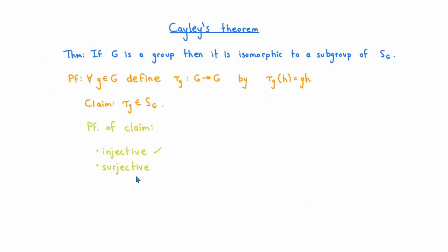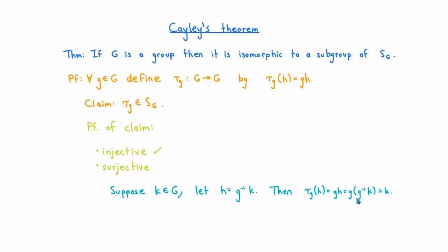To show that τ_g is also surjective, suppose k is any element of the group G. We need to show there's an element h in G with τ_g of h equal to k. Comparing with the definition of τ_g, we should take h to be the element g⁻¹k. With this value of h, τ_g of h is g times g⁻¹ times k, which equals k. Since every element of the codomain is in the range of this map, τ_g is surjective. Since it's injective and surjective, it's a bijection, hence an element of S_G. This establishes that for every g in G, the map τ_g is an element of the symmetric group on G.